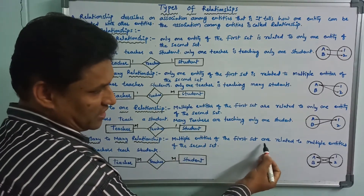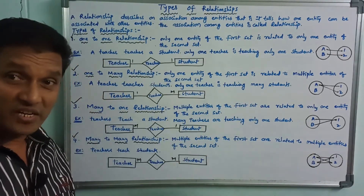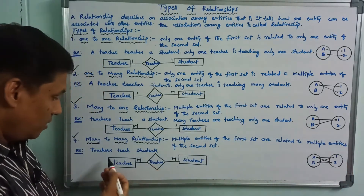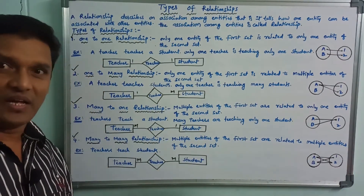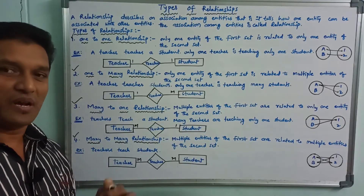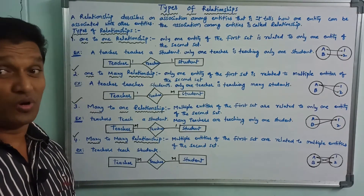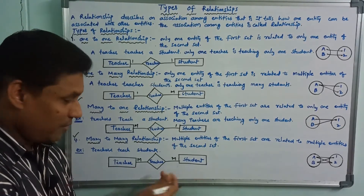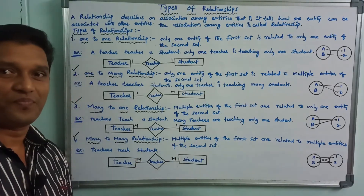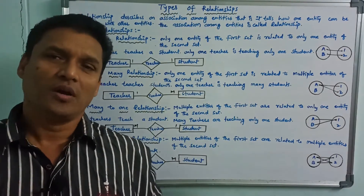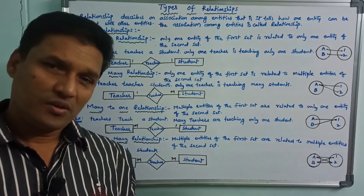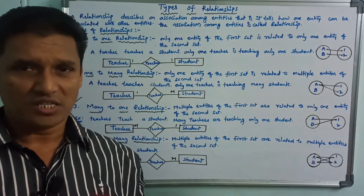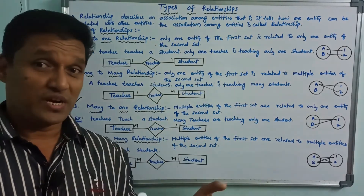Multiple entities of the first set are related to multiple entities of the second set. The diagram shows many-to-many. Example: teachers teach students — many students and many teachers. In one class there are separate teachers for Computer, Math, Physics, Accounts, and Income Tax. Separate teachers for each subject means many students and many teachers — that is many-to-many relationship.